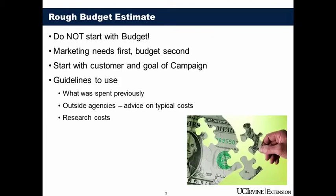A rough budget estimate — what is really important is that you don't start your marketing campaign with the estimate. You don't want to go backwards and say, okay, we have $600,000, so what can we do for that? You need to talk about your marketing needs first: what do we need to do to reach that goal? If you make a compelling argument and you have good research to back you up for what you want to do, the budget will come.